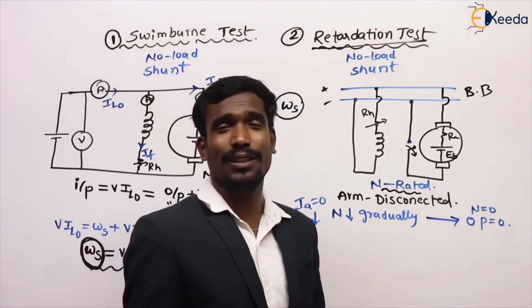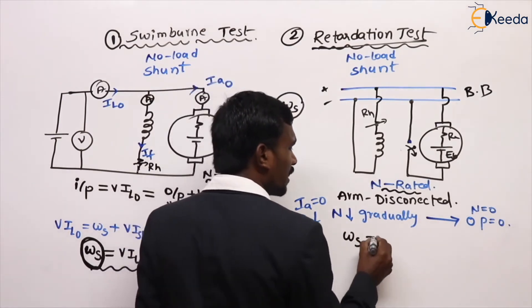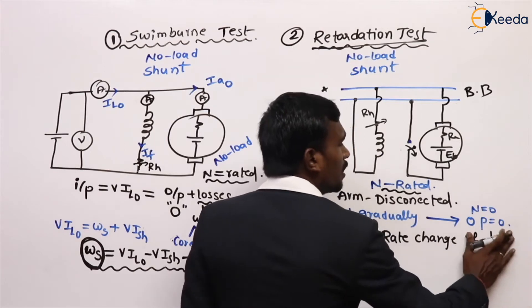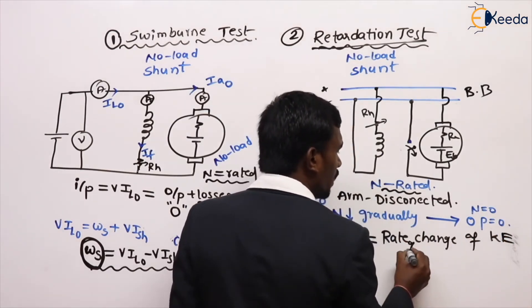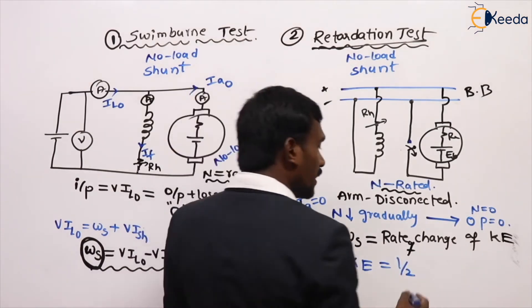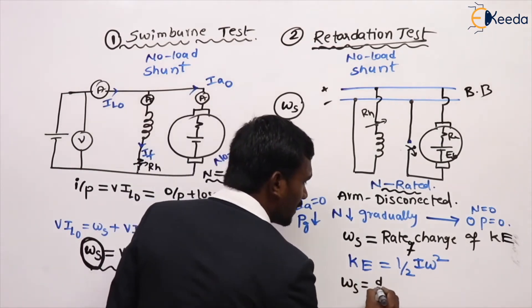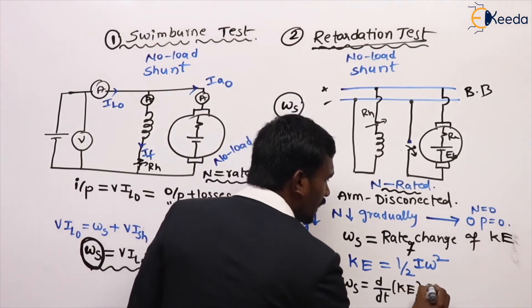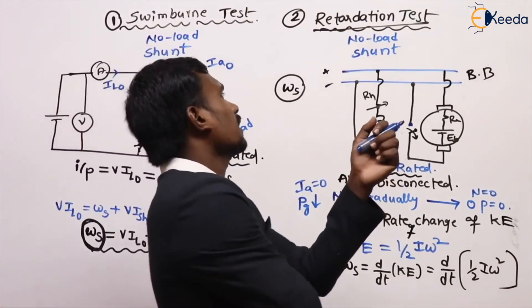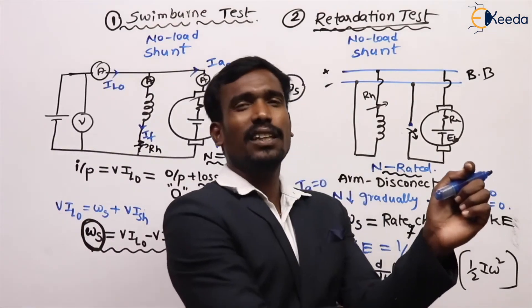How can we find stray losses in the retardation test? The stray losses in this test equal the rate of change of kinetic energy of the rotor. The kinetic energy here is ½·I·ω², not mv². So the stray losses equal the rate of change of kinetic energy of the rotor. Here the stray losses in Swinburne's test are calculated based on current and power, while here in the retardation test stray losses are based on kinetic energy of the rotor.